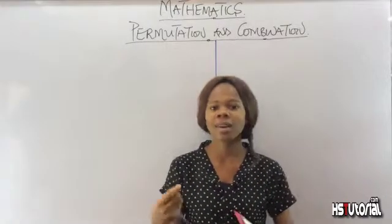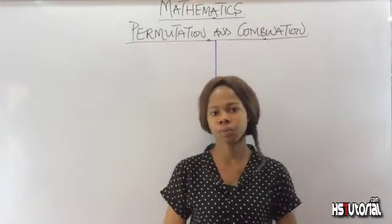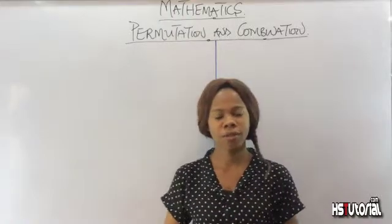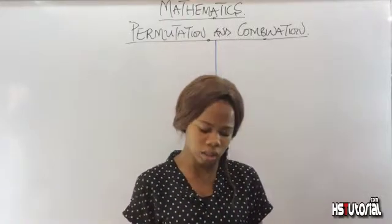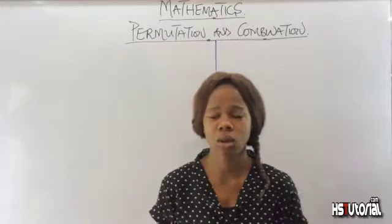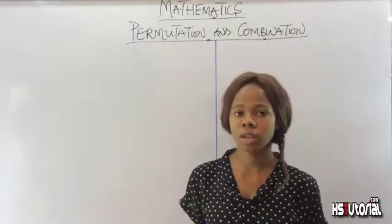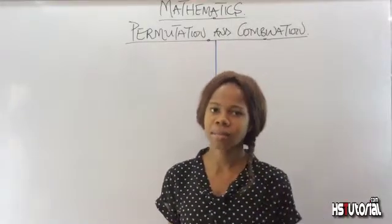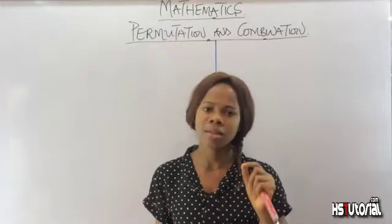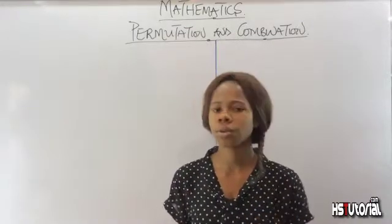So let's take a look at combination. Just like I said before, combination is simply the selection of n different objects taking r at a time, but this time taking the order of arrangement into consideration.